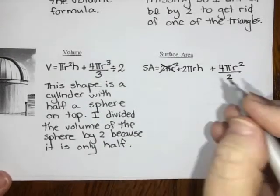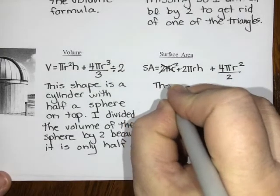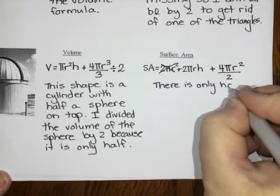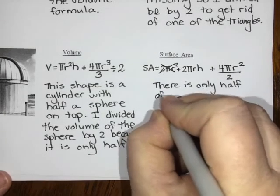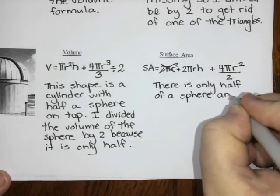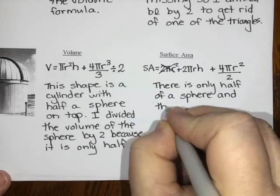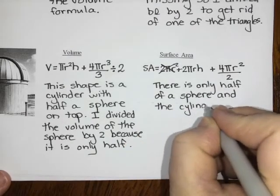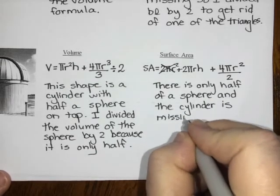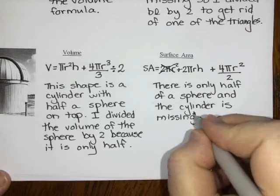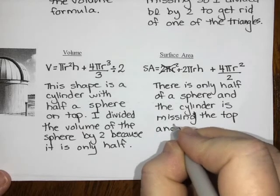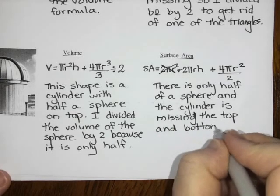I'm going to say there is only half of a sphere, and the cylinder is missing the top and bottom circles.